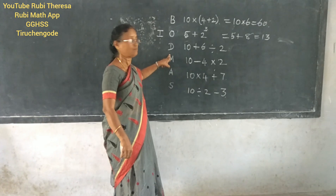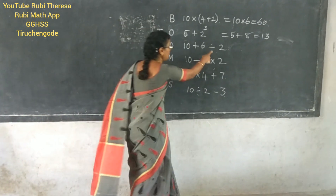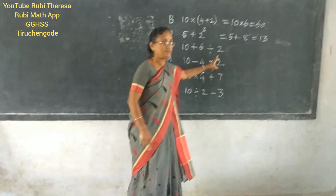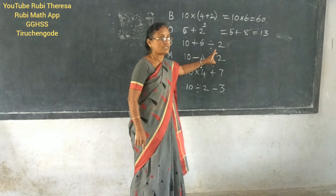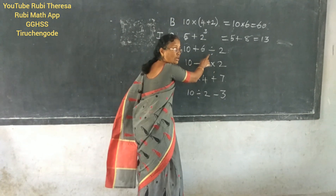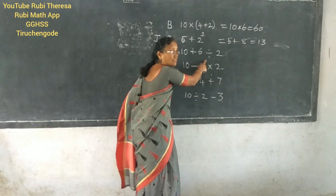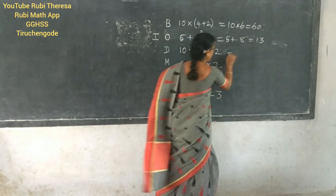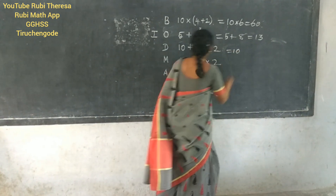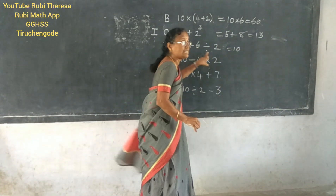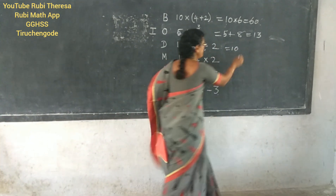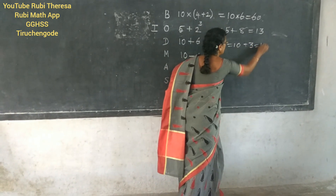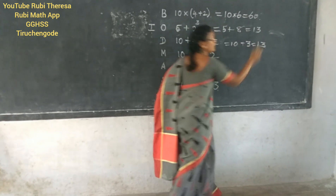Next one — division. Now division and addition, both operations together you have. But preferably which one do you have to start with? Divide. So 10. 6 divided by 2 — what is it? 3. So 10 plus 3 is 13.